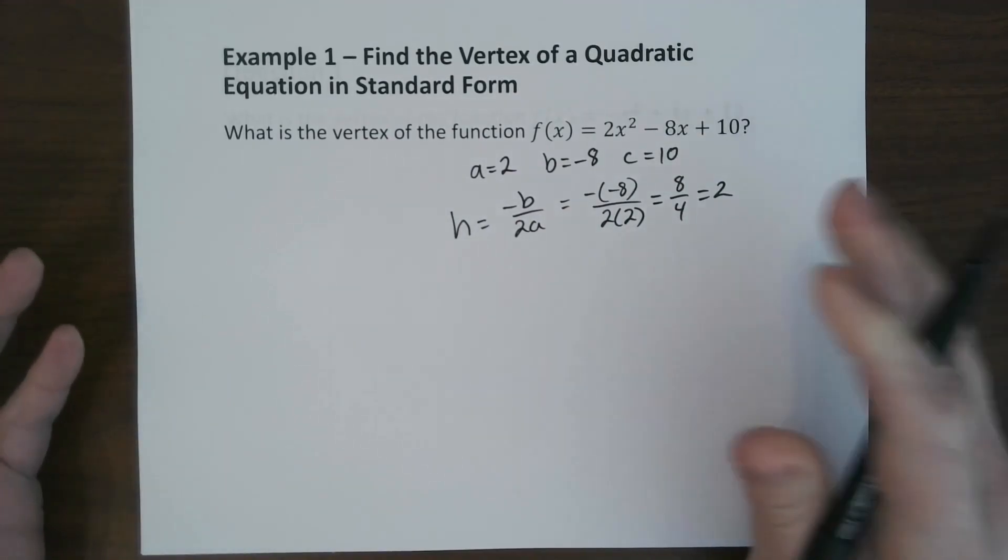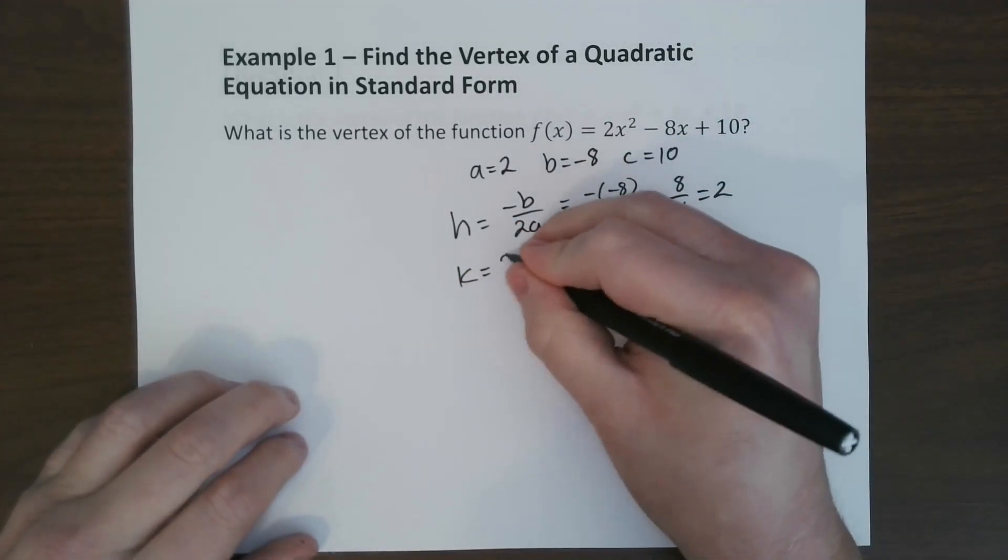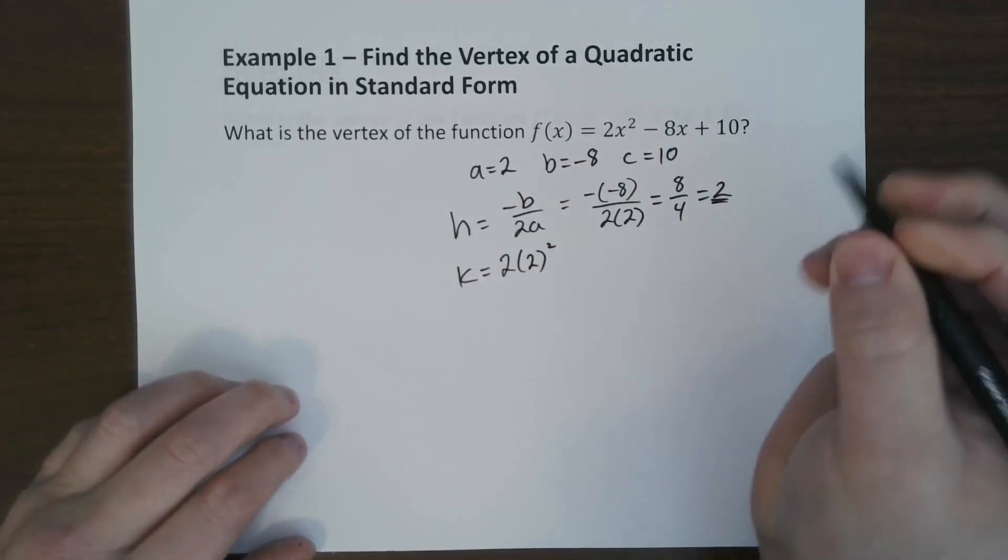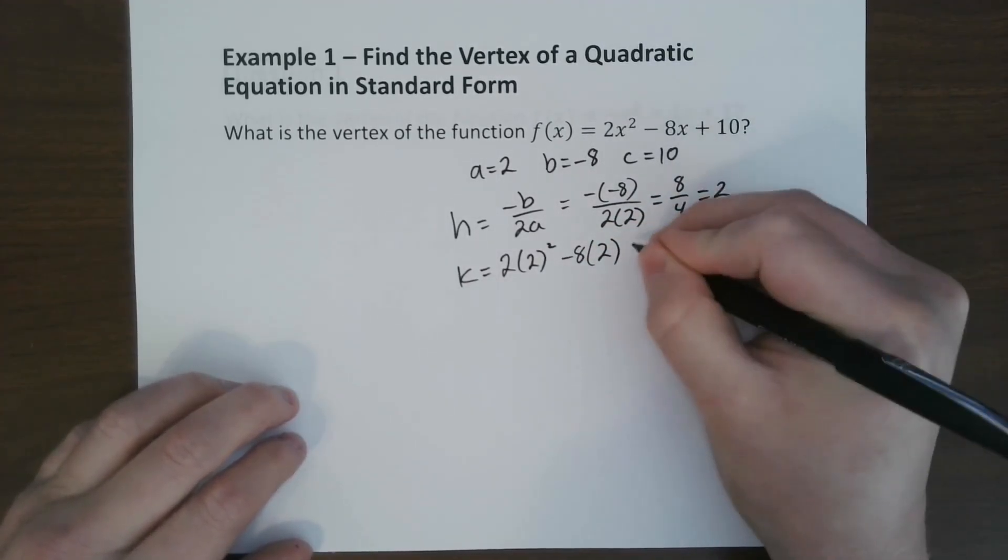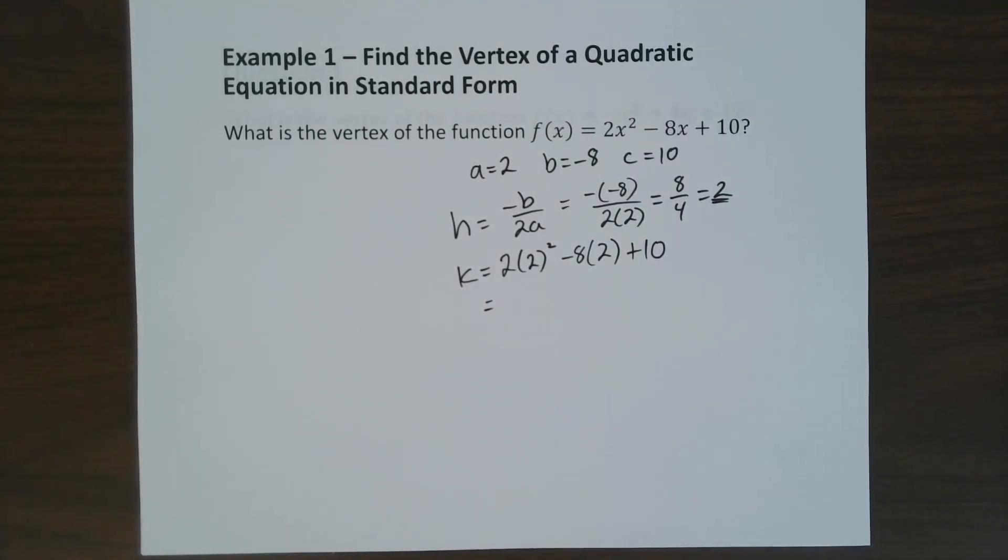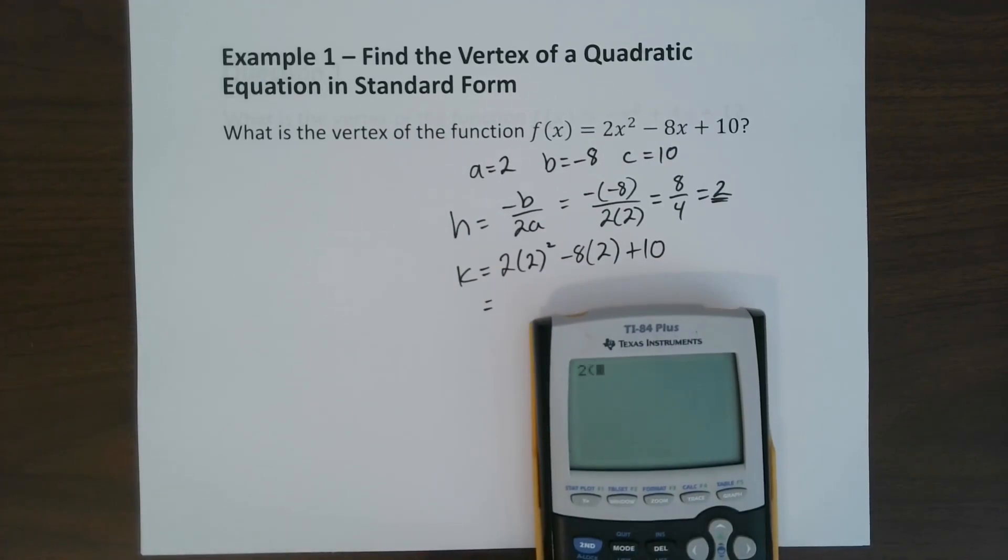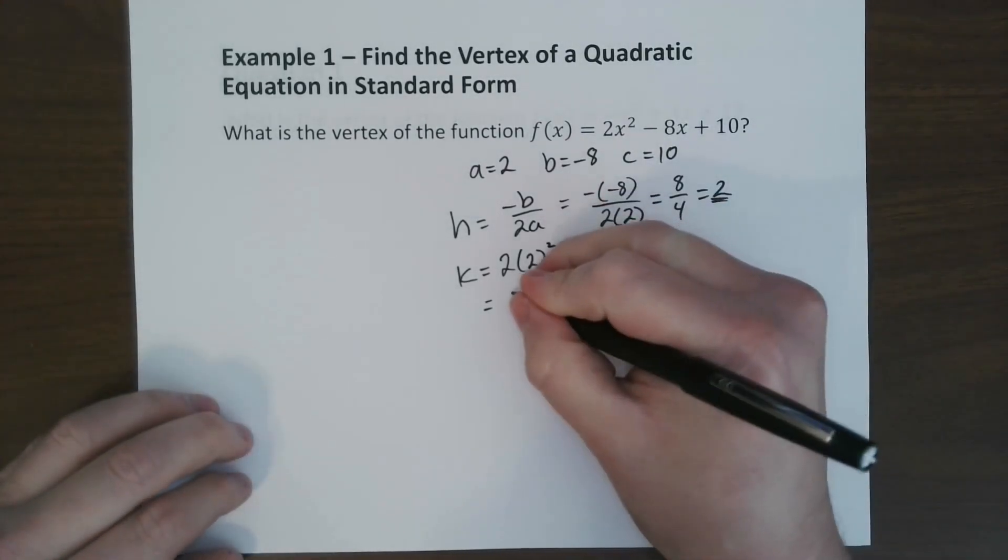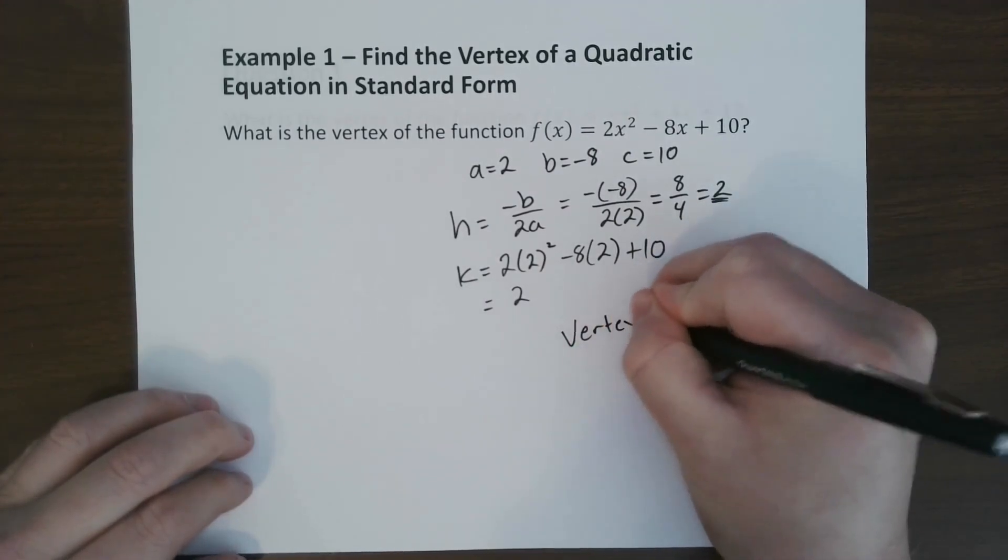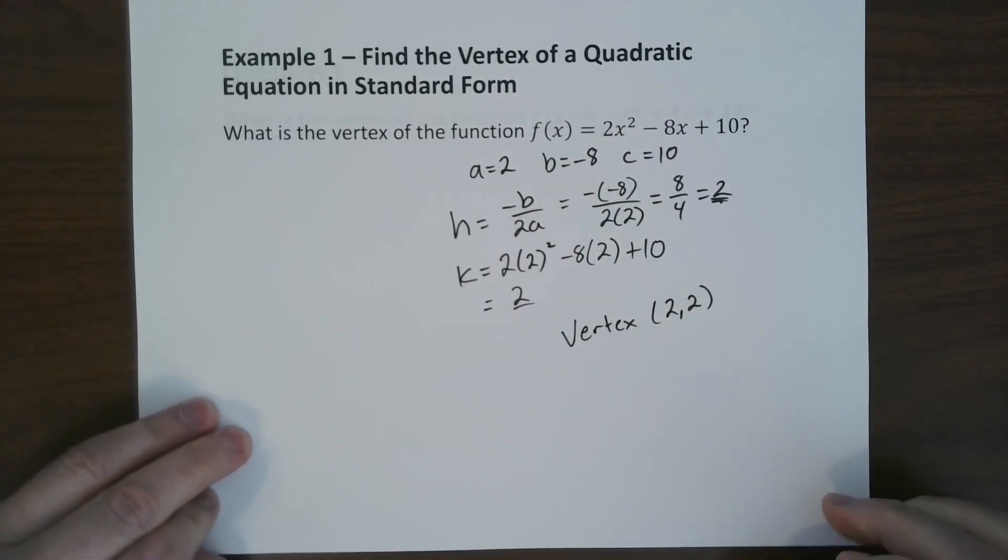Now that we've found h, to find k, all we have to do is plug it into the equation. So k would be, going back to the original, 2 times 2 squared minus 8 times 2 plus 10. And so to solve that out, all we have to do is plug it in the calculator. So using any calculator, we just go 2 parenthesis 2 squared, minus 8 times parenthesis 2 plus 10. Plug that in, we get 2. So this entire thing is 2. So our vertex is 2 comma 2.